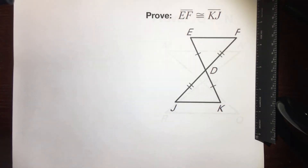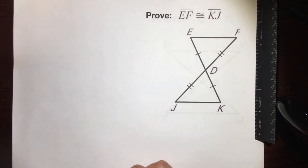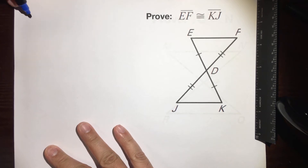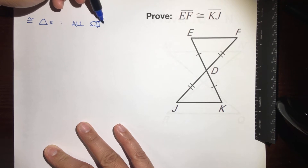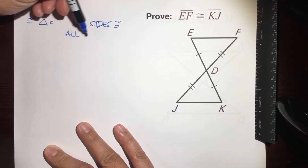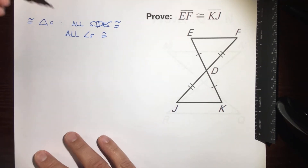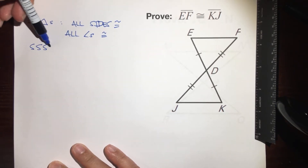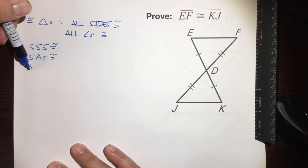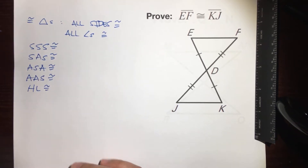Our initial thoughts were to prove this triangle is congruent to this triangle, so let's see what we know about congruent triangles. Fact number one: all sides are congruent and all angles are congruent. Next, we know five shortcuts about congruent triangles: side-side-side, side-angle-side, angle-side-angle, angle-angle-side, and HL congruency.